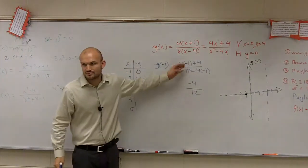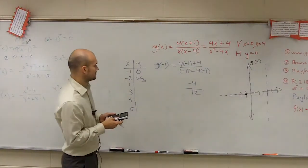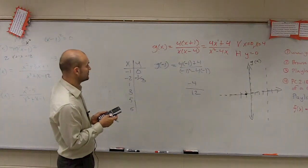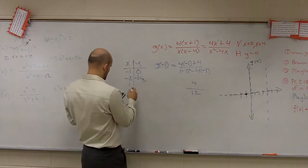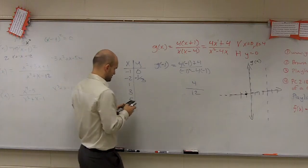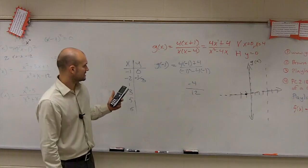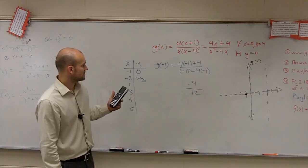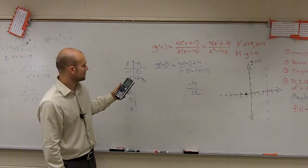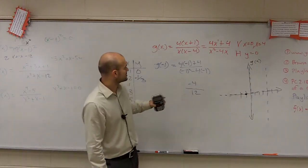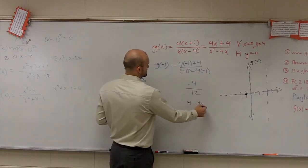Do you guys see how I'm doing all these? I'm just plugging it into the function. For the video I need to hurry it up. So negative 2 gives us negative one-third — let me verify: negative 8 plus 4 is negative 4 on top, and on the bottom negative 2 squared is 4, minus 4 times negative 2 is positive 8, so 4 plus 8 is 12. Negative 4 over 12 confirmed.